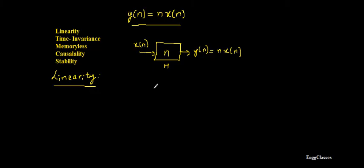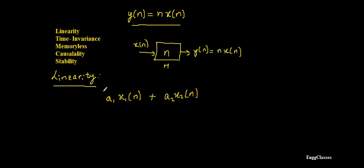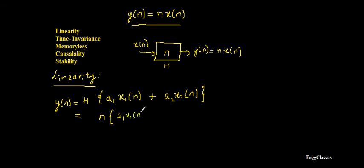To test linearity, we consider two different inputs x1(n) and x2(n). We scale the first input by a1 and the second by a2, then add them and give this combined input to the system operator h. The input is a1·x1(n) + a2·x2(n), so the output will be n·[a1·x1(n) + a2·x2(n)].